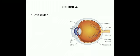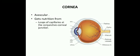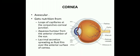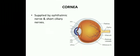The anterior chamber is present between the cornea and the lens, constituting the anterior segment. The iris divides it into the anterior and posterior chambers. The cornea is avascular and gets its nutrition from the loops of capillaries at the conjunctivocorneal junction, aqueous humor from the anterior chamber, and the lacrimal secretion spreading as a fluid film over the anterior surface of the cornea.